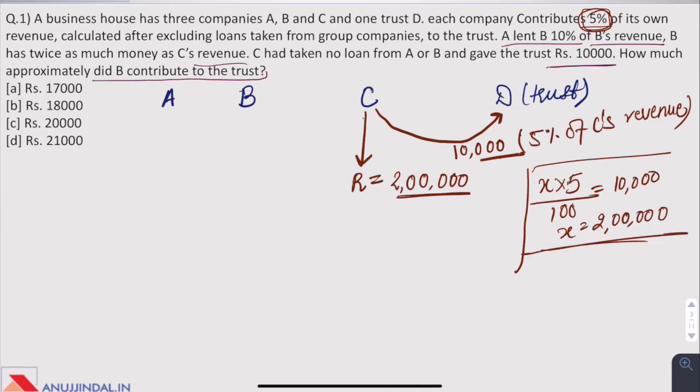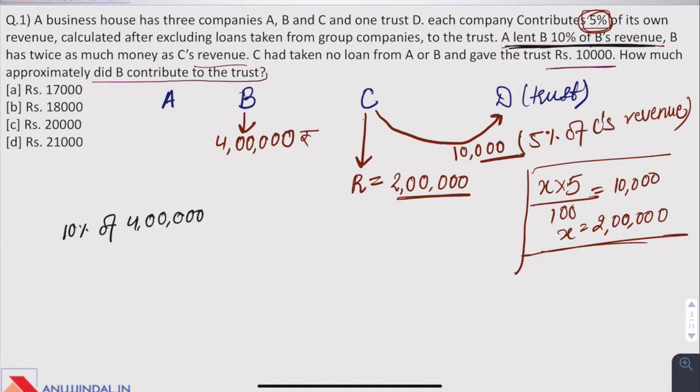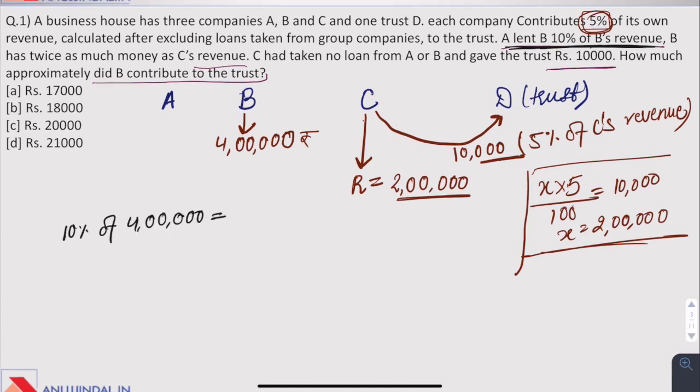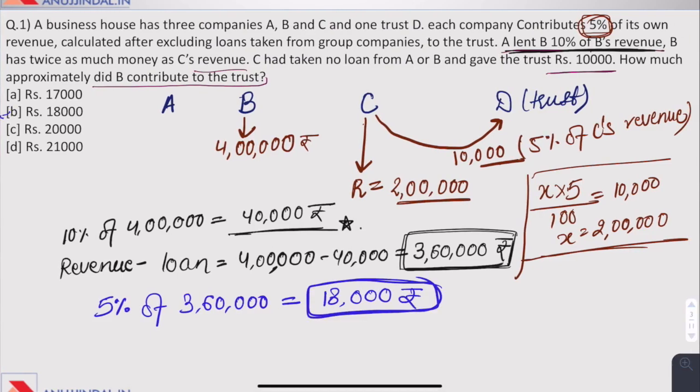And in the question it has been given that B's revenue is twice as that of C. So the revenue of B is 4 lakhs. A lent B 10% of B's revenue. So 10% of 4 lakh is 40,000 rupees. As per the question we have to calculate the contribution after excluding the loan. So revenue minus loan is 4 lakh minus 40,000 which is 3 lakh 60,000 rupees. Now B will contribute 5% of the revenue to the trust D. So 5% of 3 lakh 60,000 would be 18,000 rupees. Answer is B, 18,000 rupees.